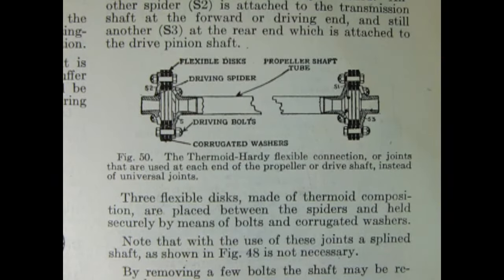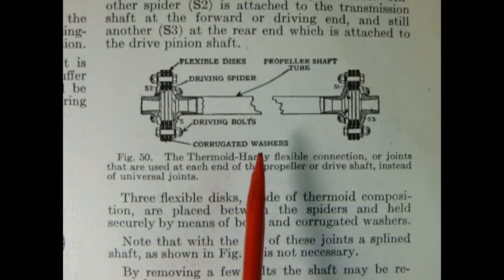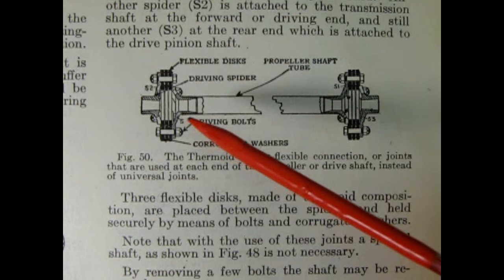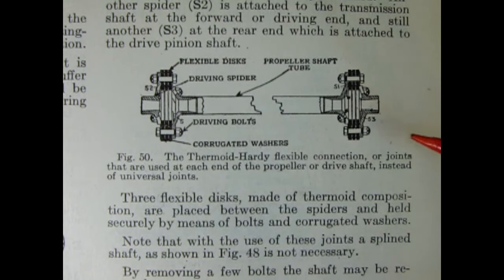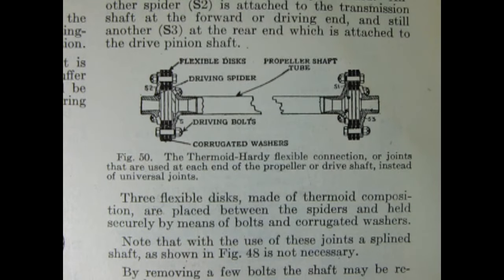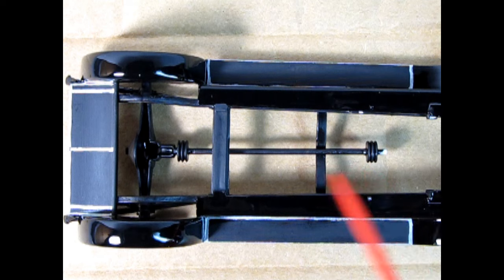My research has finally led me to an answer as to what those discs are at the end of the driveshaft. This is known as the Thermoid Hardy flexible connection or joints that are used at each end of the propeller or driveshaft instead of universal joints. Three flexible discs made of Thermoid composition are placed between the spiders and held securely by means of bolts and corrugated washers. Note that with the use of these joints a spline shaft as shown in figure 48 is not necessary. By removing a few bolts the shaft may be removed. So I will paint these according to what I discovered.